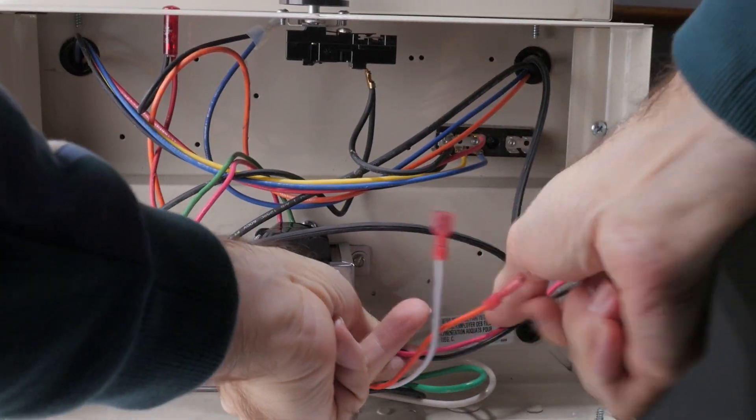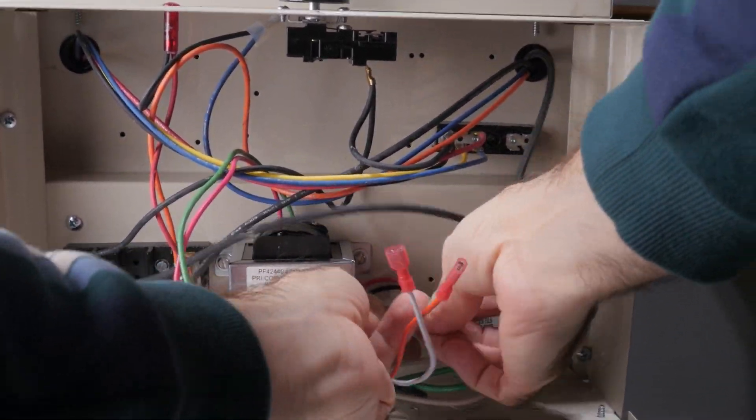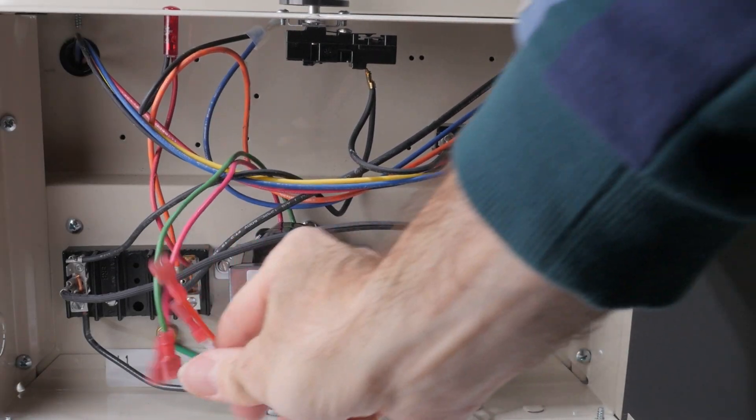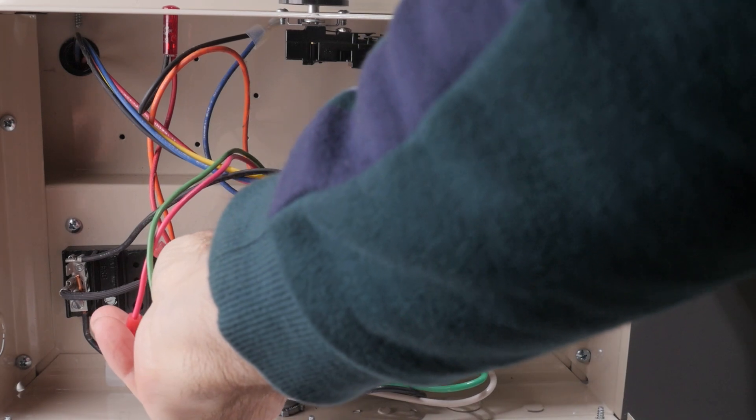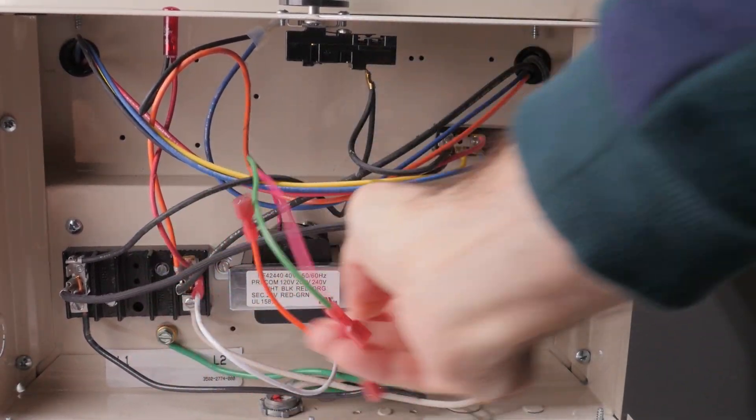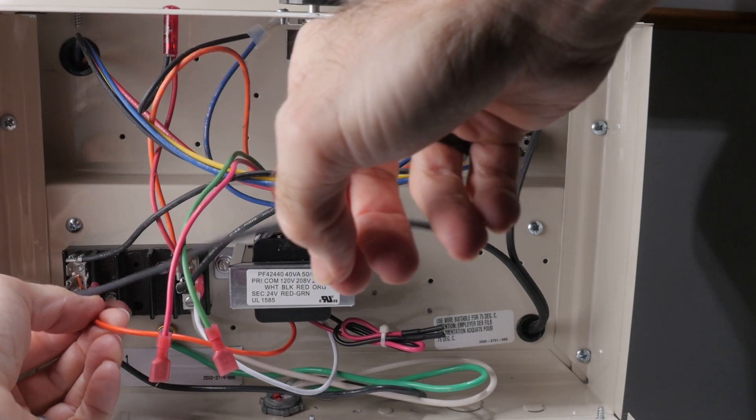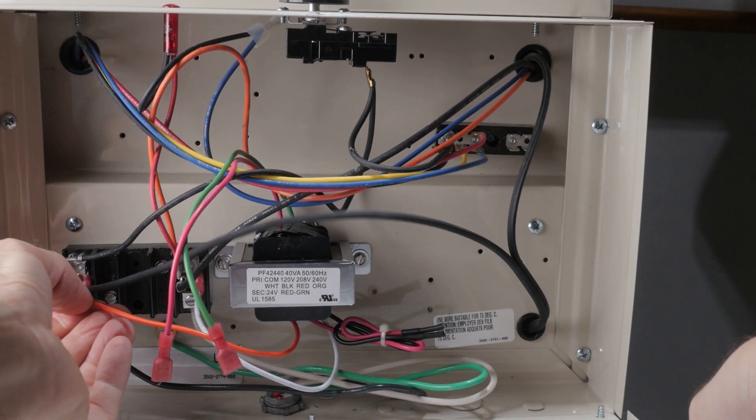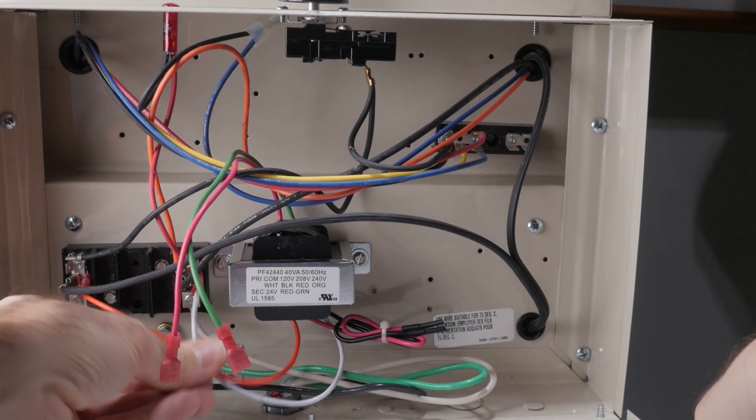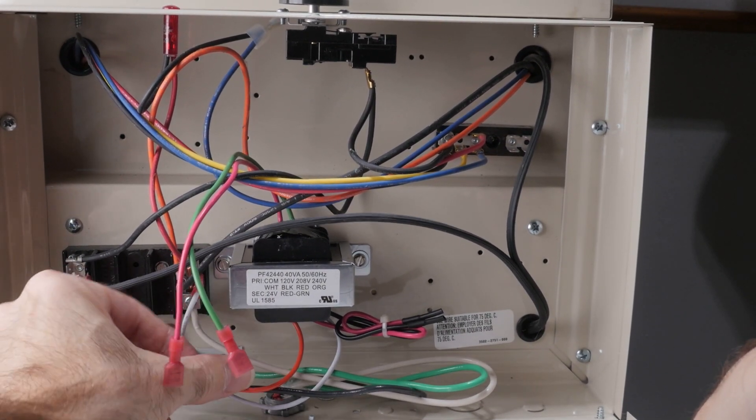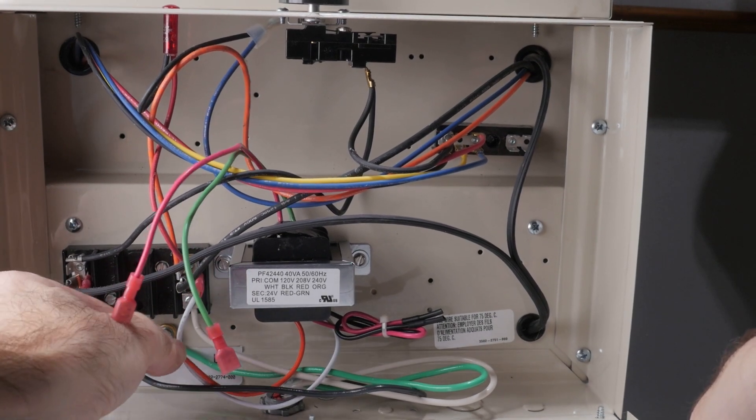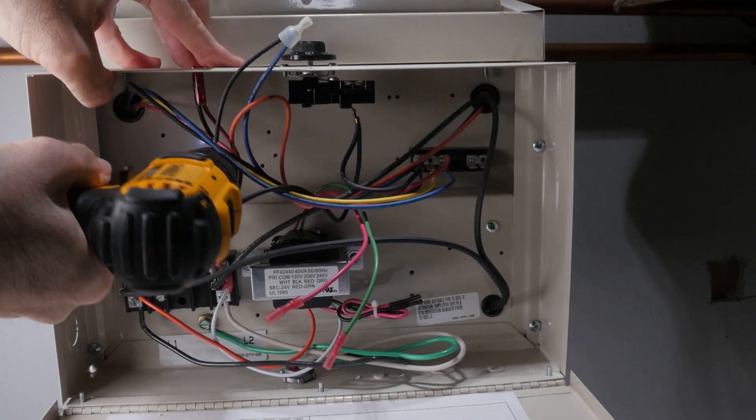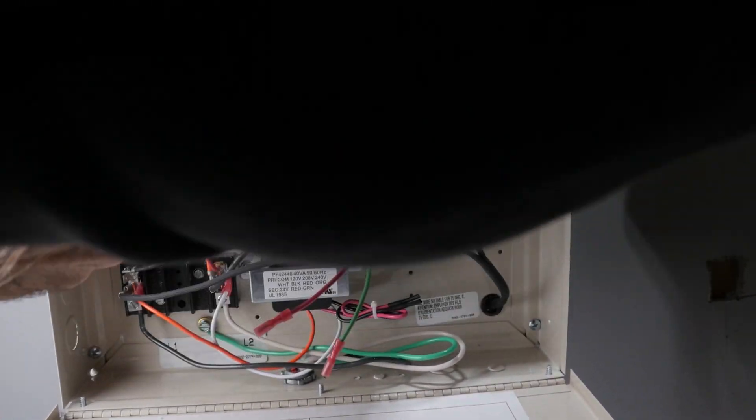I used a zip tie to bind up the two unused leads and to keep them out of the way. I then connected the white primary wire to the L2 field wiring lug and the orange wire to the L1 lug.